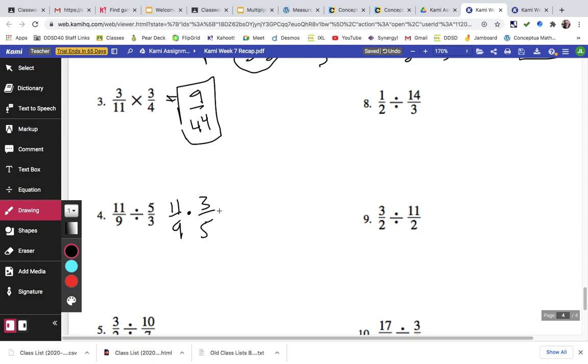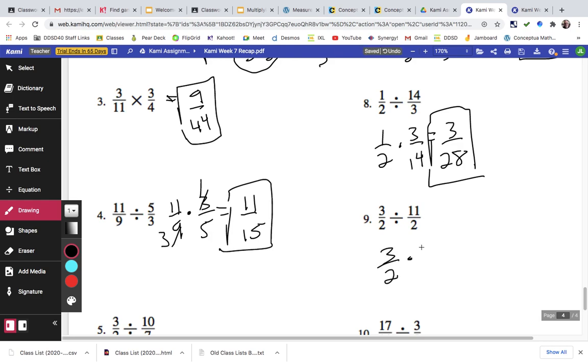This is 11/9 times 3/5, the reciprocal of 5/3. Those will pre-simplify, so that's going to be 11/15. This is 1/2 times 3/14, which equals 3/28. There's no shared factors in 3 and 28.